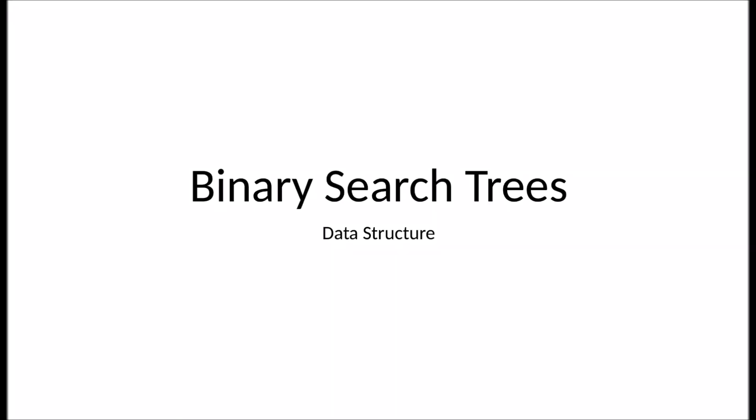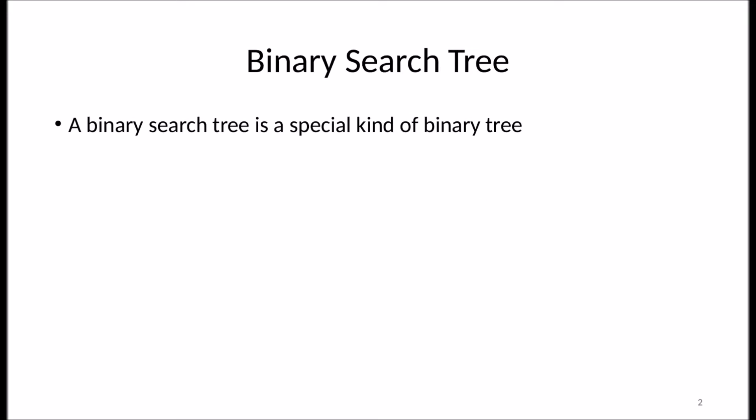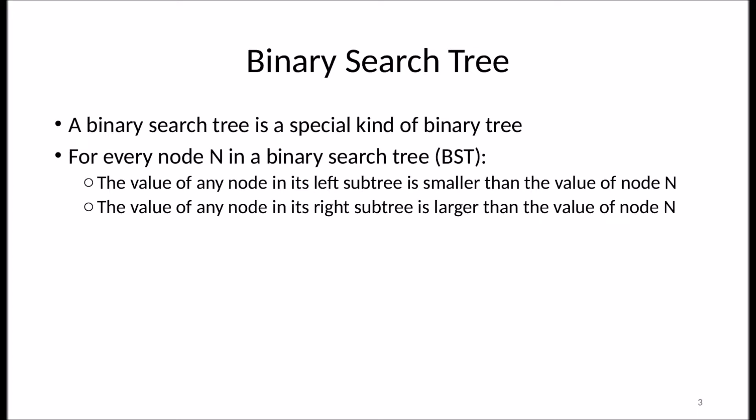In this video I cover binary search trees. A binary search tree is a special kind of binary tree that fulfills the following condition: for any given node n, the value of any node in its left subtree is smaller than the value stored in node n, and the value of any node in its right subtree is larger. This condition excludes equality, which means the binary search tree cannot store the same value twice.